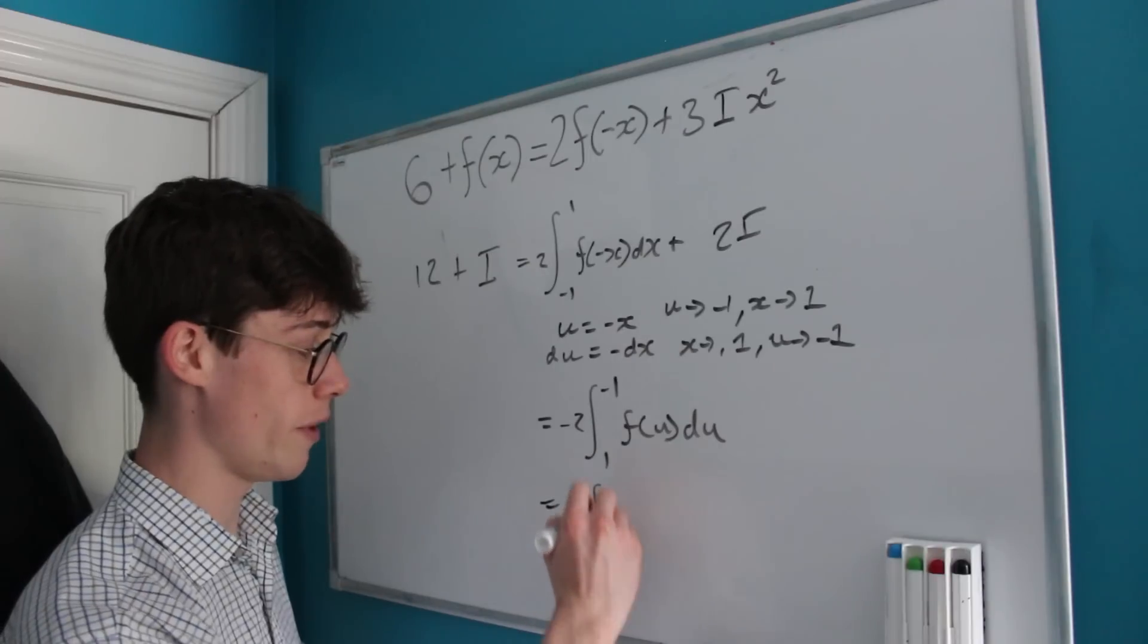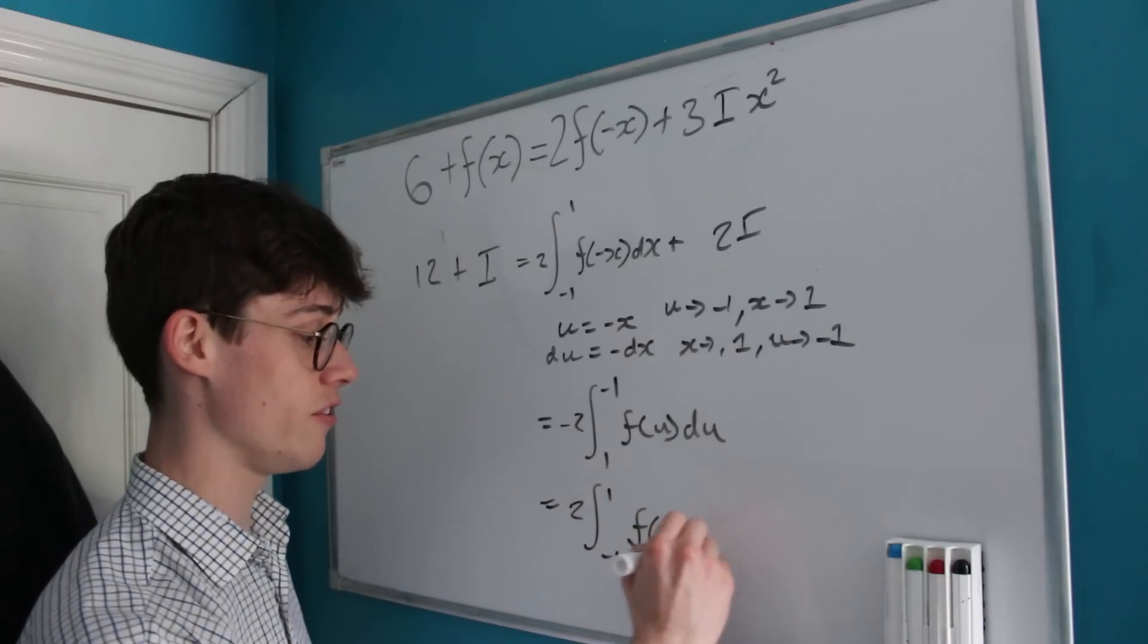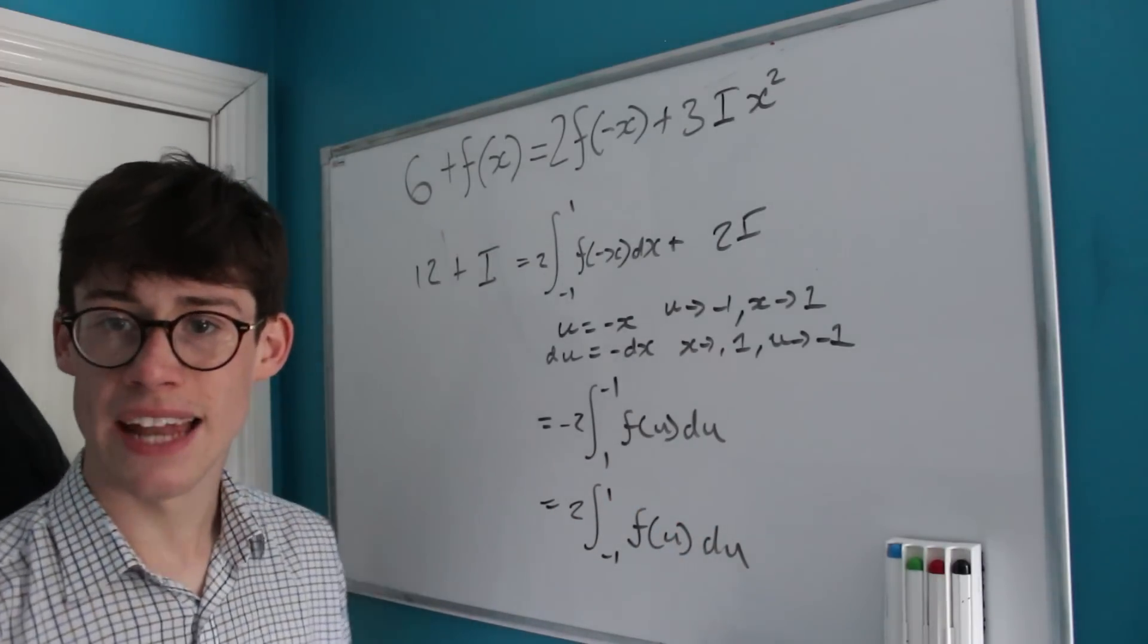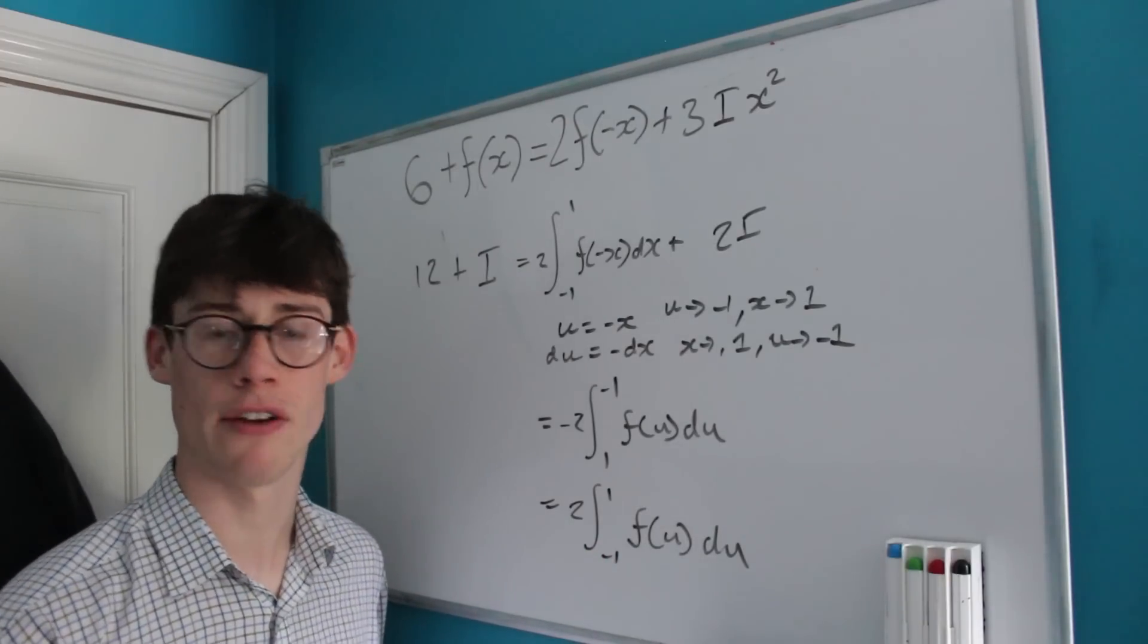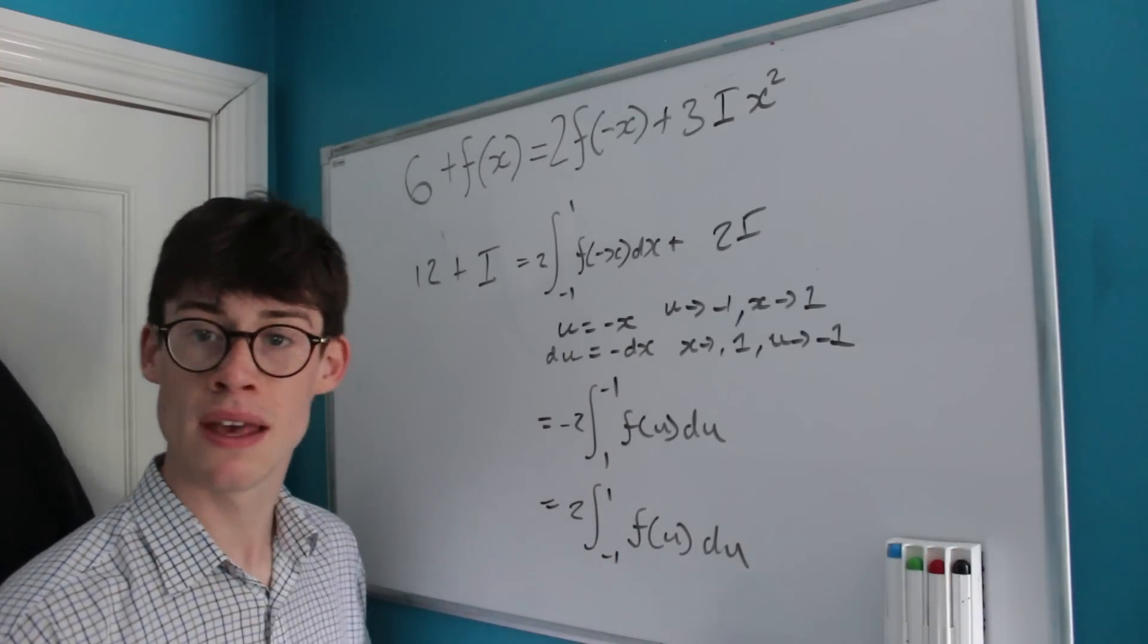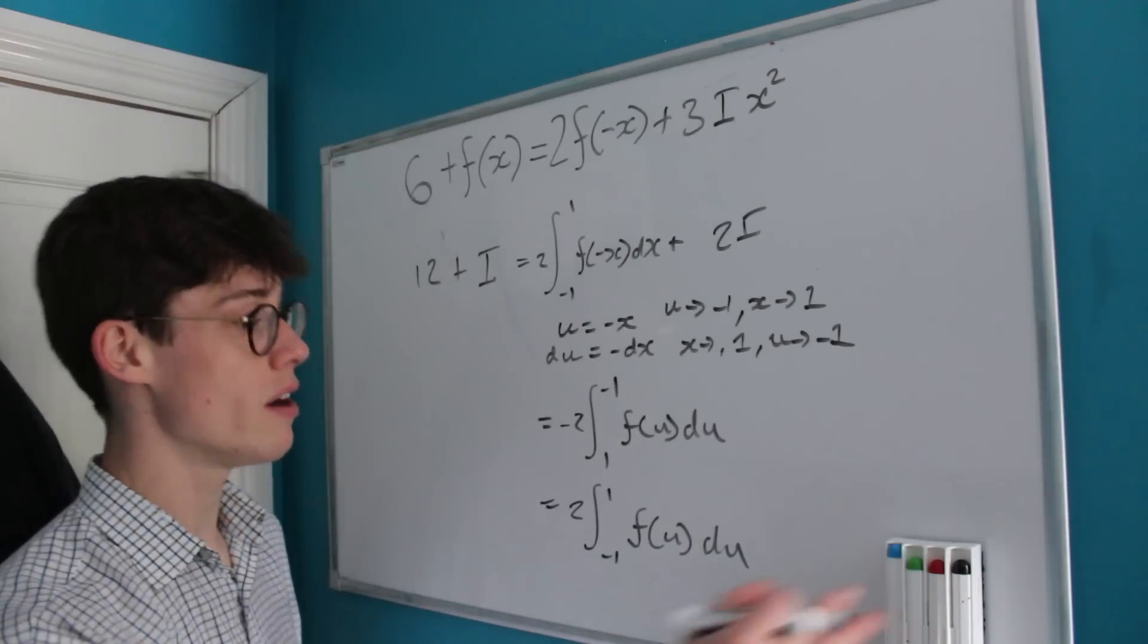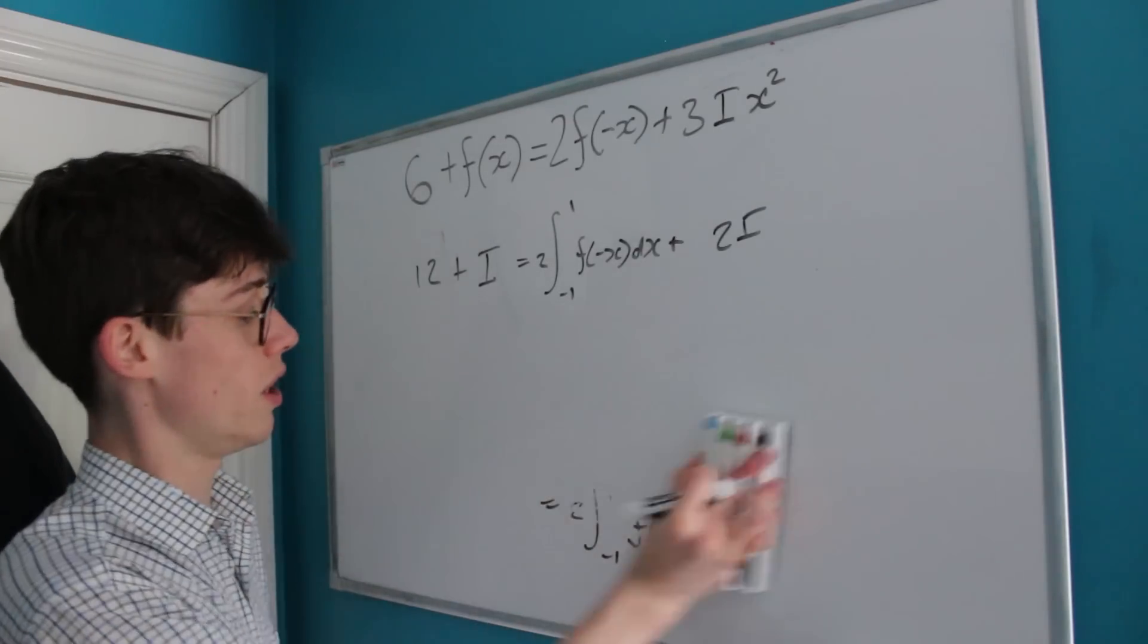This means that this is equal to 2 times the integral from -1 to 1 of f(u)du. As we said earlier, the value of this integral is independent of the variable as long as the bounds are the same, and so this value is just I, which means after all of this work we can swap here for just I.